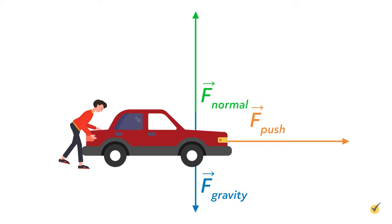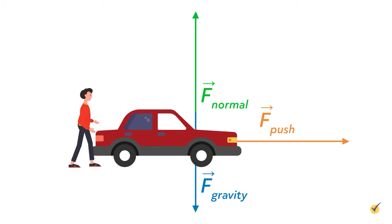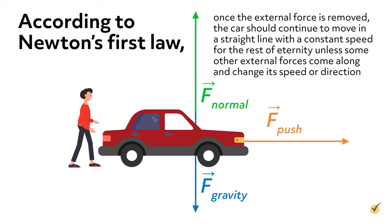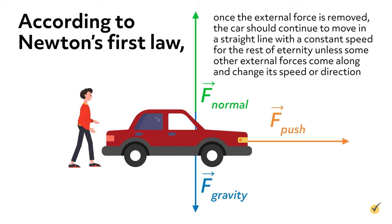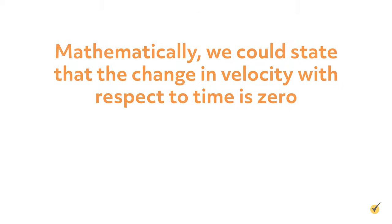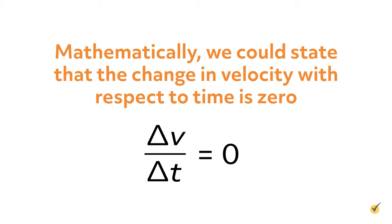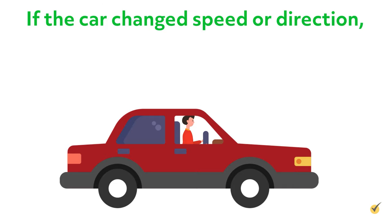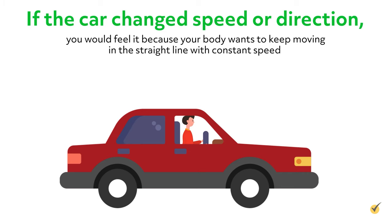Now let's imagine someone pushes the car, providing an external force and giving it a small velocity. According to Newton's first law, once the external force is removed, the car should continue to move in a straight line with constant speed for the rest of eternity unless some other external forces change its speed or direction. Mathematically, the change in velocity with respect to time is zero. But what if we made the car the inertial frame of reference and discussed the motion of the passengers inside it? In that frame of reference, you and I are not moving with respect to each other. If the car changed speed or direction, you would feel it because your body wants to keep moving in a straight line with constant speed.